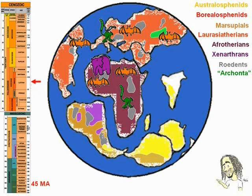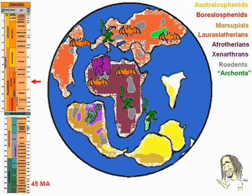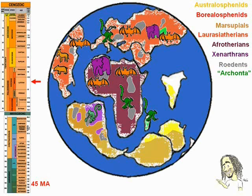45 million years ago, the lemurs came floating on vegetation rafts to Madagascar, which is now closer to Africa. Also with vegetation rafts, the primates arrived in South America, where they will originate all the New World monkeys. The marsupials spread through Antarctica and arrived to Australia. Among the Laurazatherians, the first lineage of horses and tapirs appears in North America, as does the camel's lineage. Among the Afrotherians, elephants reach Asia.